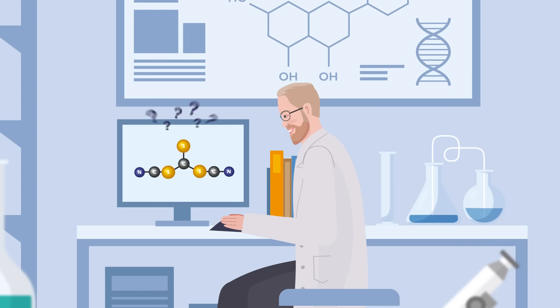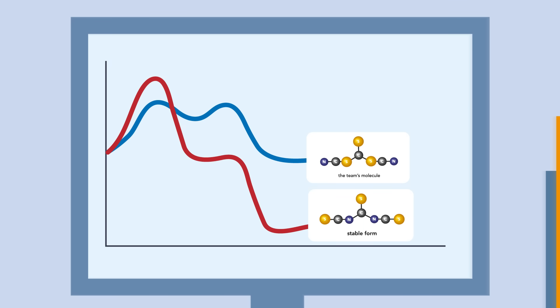The team used computer models to figure out why this was the case. They discovered that it's all about the path that the reaction takes. During its synthesis, thiocarbonyl dithiocyanate forms quickly through a low-energy shortcut, locking in this less stable form before it has a chance to rearrange into a more stable state.